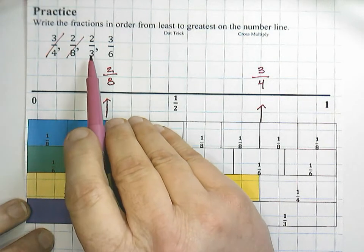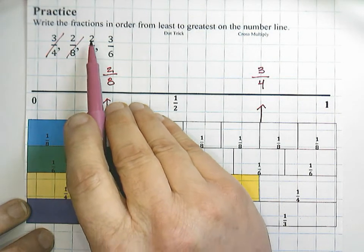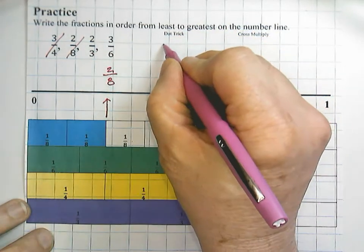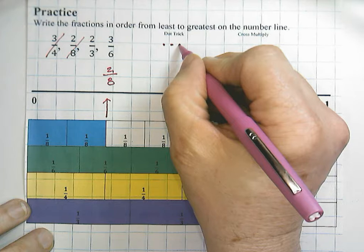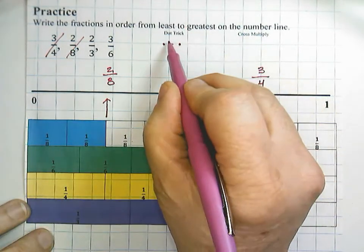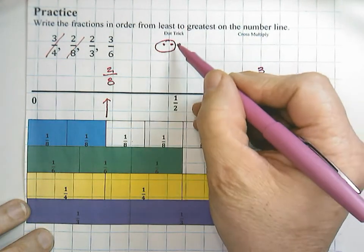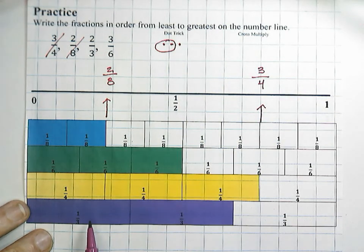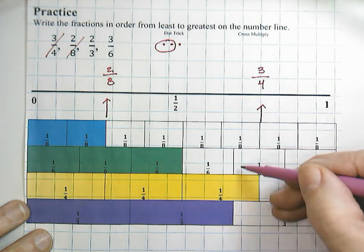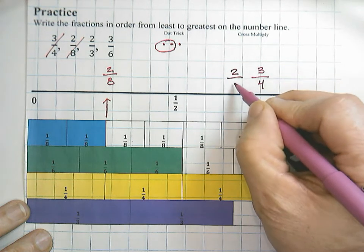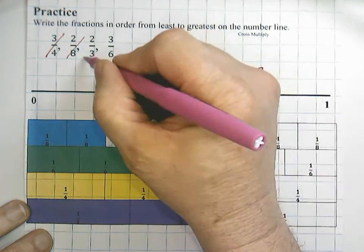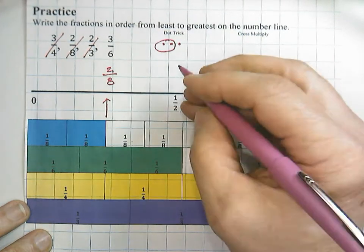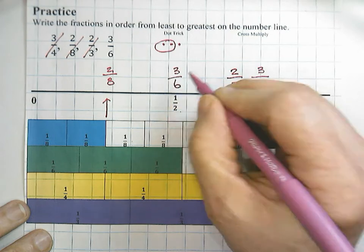Two-thirds — a little trick: if you get stuck, you can use what I call the dot trick. See your bottom number of three? Make three dots and circle two of them, and you can see visually that that is greater than half. So two-thirds would be over here. And finally, three-sixths would be one, two, three — that would be equivalent to one-half.